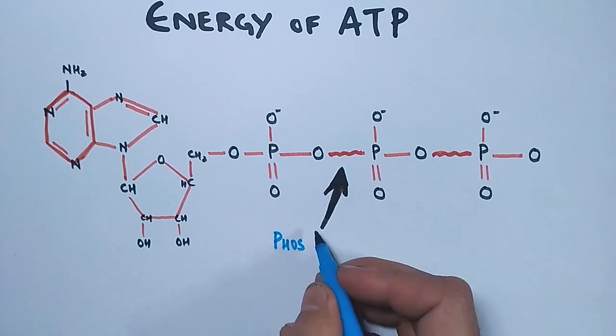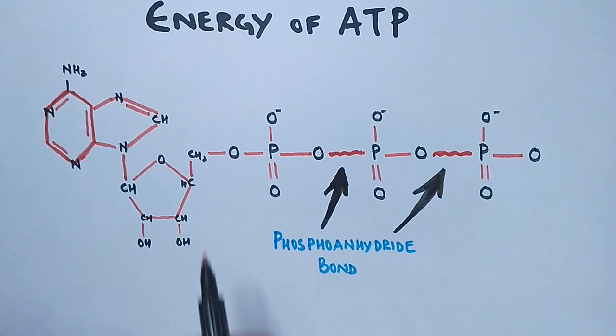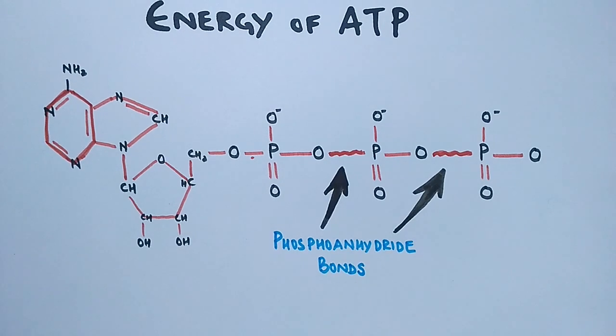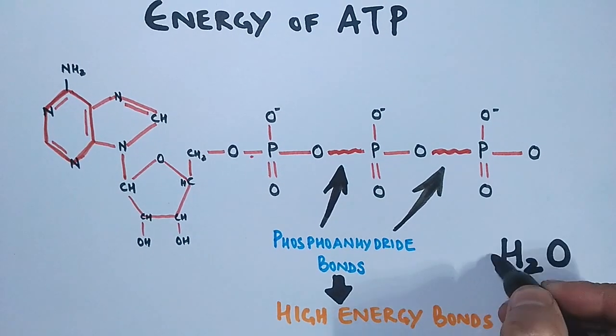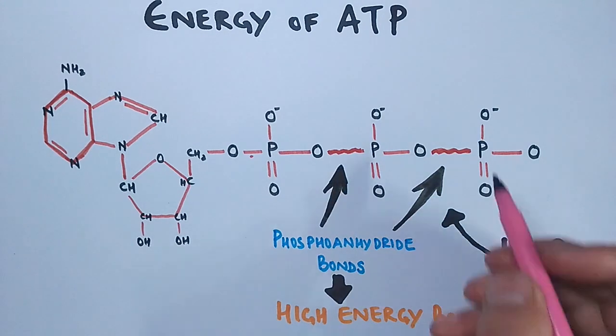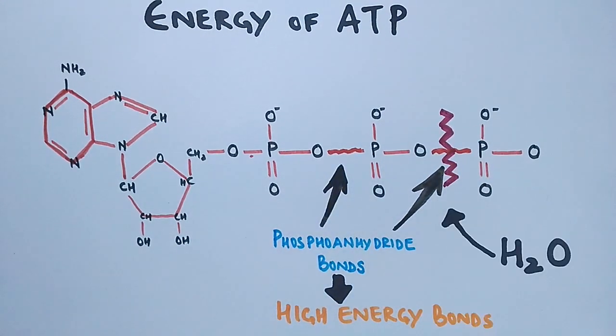These phosphoanhydride bonds are very high energy bonds, and when the water molecule comes in and hydrolyzes the terminal phosphate, the bond is broken and we get the energy for cellular processes.